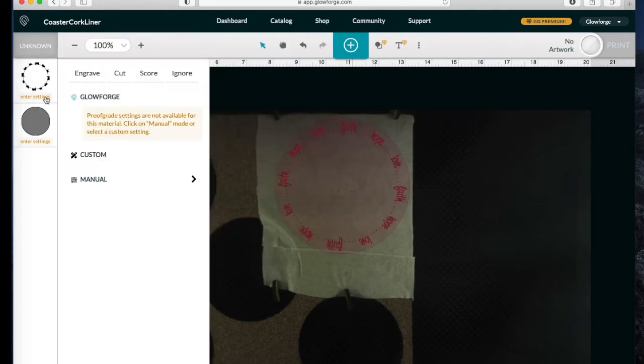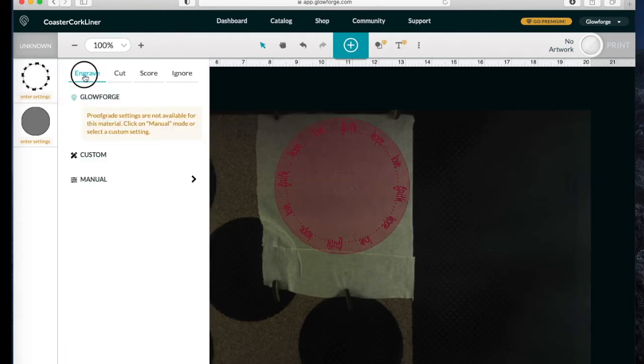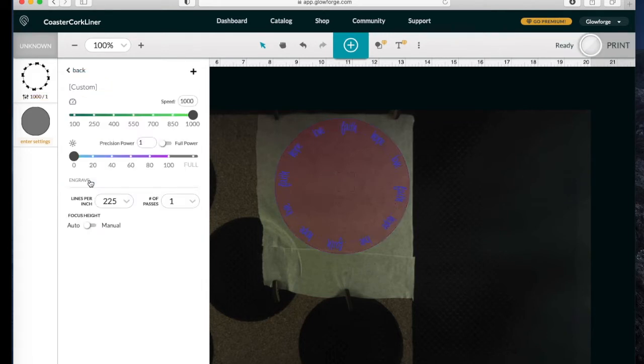So now I need to enter the settings for my engraving. First, I need to tell it engraving is what I'm doing, so I'll click right here, make sure I'm on that layer. Enter Settings, click on Engrave. Now to enter my actual settings, you go to Manual. And based upon some tests that I did, I'm going to use a speed of 700 and a power of 50. For the lines per inch, which is like dots per inch, it helps in the clarity or the resolution. With this engrave, I'm fine with 225. You see, here's some other options.